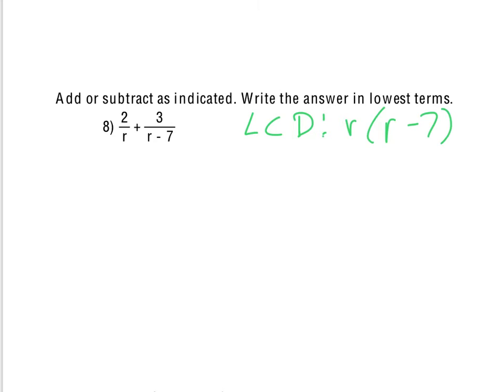So what we need to do is multiply the 2 over r by what it's missing from that LCD, which is r minus 7. We do the same thing to the top and bottom, so that we're not changing the value of that expression.